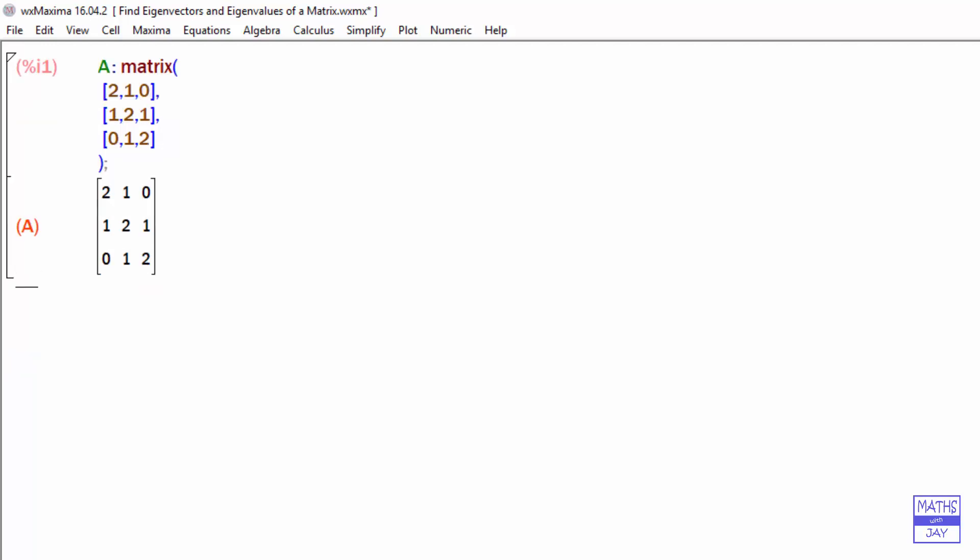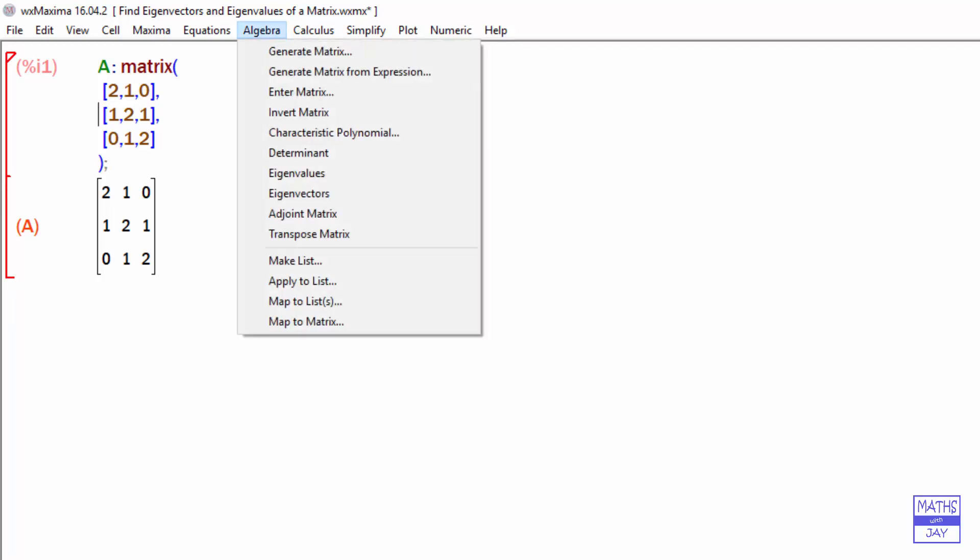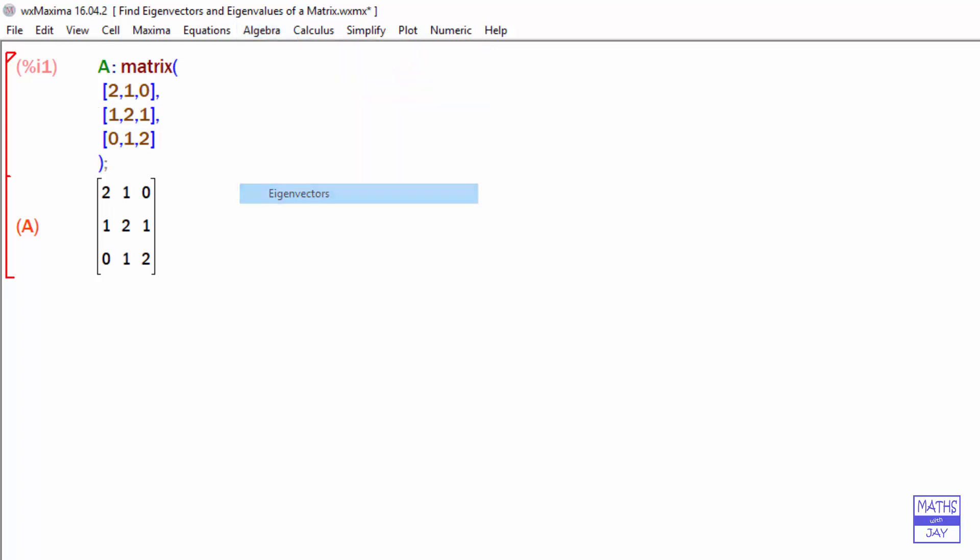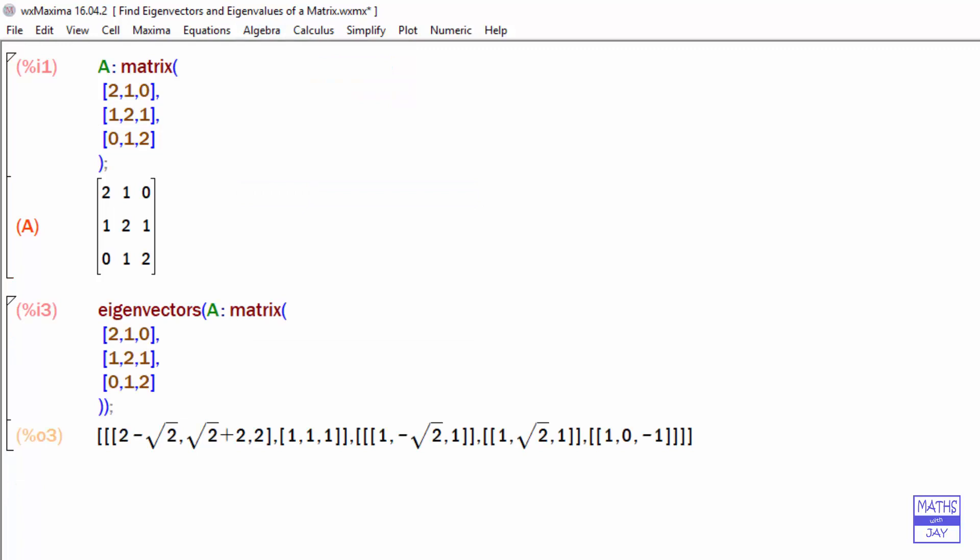So to find the eigenvectors and eigenvalues, let's first of all select this. Then we look at the algebra menu again, and we only need to look at eigenvectors here. And that has given us first of all the three eigenvalues, and then a possible eigenvector that corresponds to each of the eigenvalues.